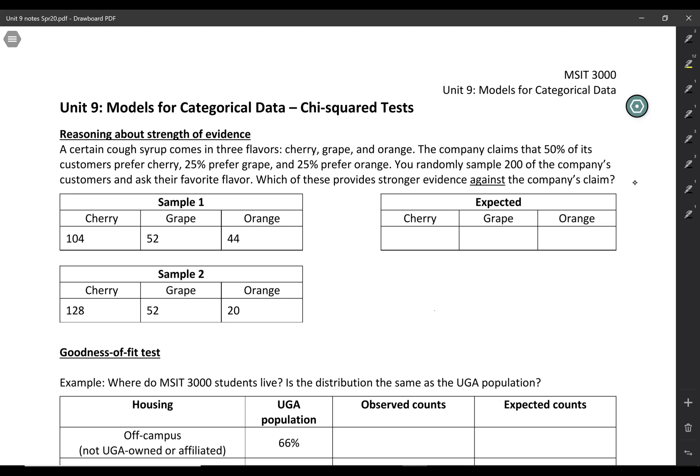So two questions to think about before we move on. First of all, if the company's claim were true, how many would you expect in each of these categories? So what would be the counts that you would expect in each of those categories?